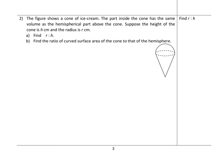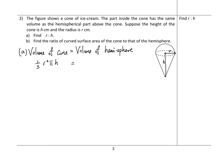The figure shows a cone of ice cream where the part inside the cone has the same volume as the hemispherical part above the cone. The height of the cone is h cm and the radius is r cm. The volume of the cone is 1/3 π r² h, and the volume of the hemisphere is 1/2 times 4/3 π r³.